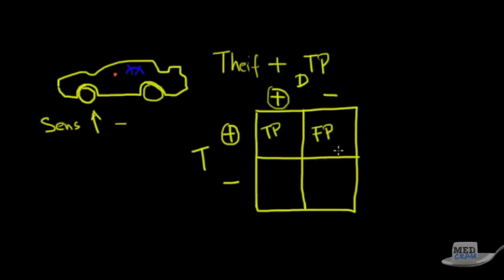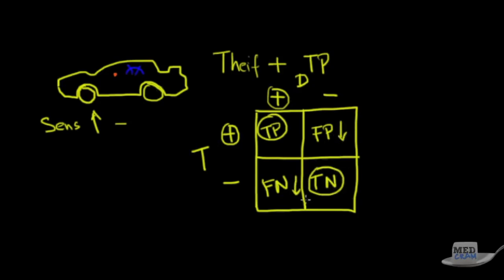False positives are not optimal — every time the alarm goes off you have to go check the car, and the more it goes off, the less seriously you'll take it. The other bad possibility is your car being broken into but the alarm doesn't go off — that's a false negative, probably the worst result. You go to the parking lot and the car is gone, the alarm never went off. And finally, the most common outcome is a true negative — the car alarm is not going off and your car is not being broken into. We like true positives and true negatives, and we want to minimize false positives and false negatives.